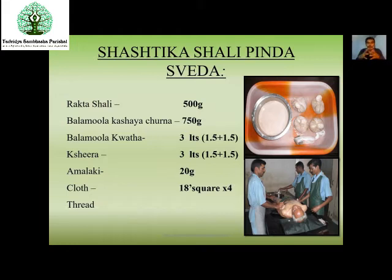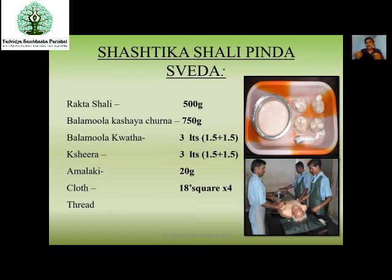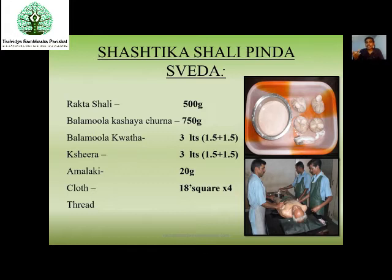For preparation, we use Rakta Shali (red rice), Balamula Kvatha, and Kshira. The main ingredient is Balamula Kvatha — we use 1.5 litres of Balamula Kvatha and 1.5 litres of Kshira for preparation of Rakta Shali. Boil Balamula Kvatha plus Kshira plus Rakta Shali and prepare the rice. Some also add Amalaki to this preparation.